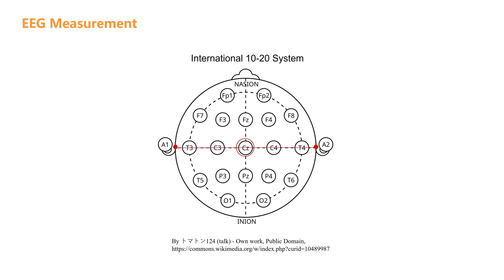Now, looking at the horizontal plane, a line is drawn from the left preauricular point through the central point to the right preauricular point. Along this line, symmetrical points are marked.